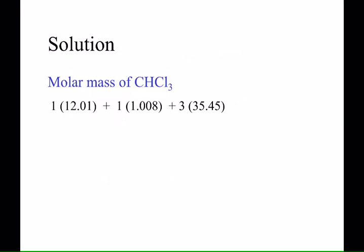The molar mass of the compound is calculated up here. The decimal number for carbon is 12.01, there's only one of them. The decimal number for hydrogen is 1.008, there's only one of them. The decimal number for chlorine is 35.45, and there are three of them. Rounding to two decimals, I get a molar mass of 119.37 grams per mole.